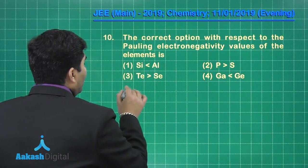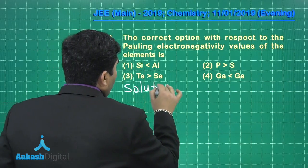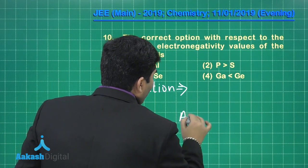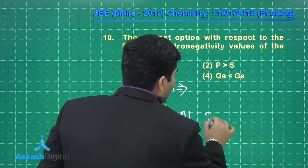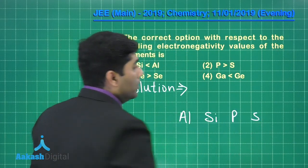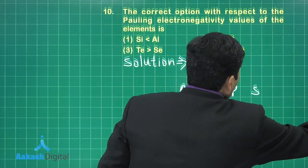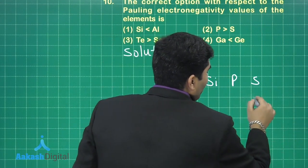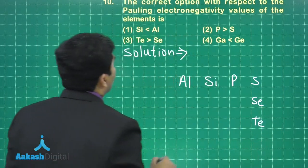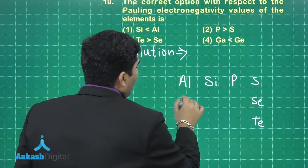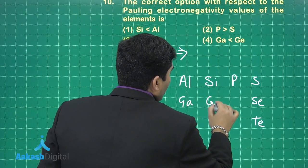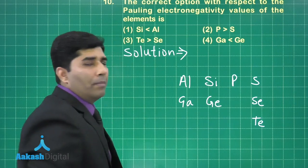What we can do in this question is - we know that aluminum, silicon, phosphorus and sulfur, they are in the same period and after sulfur it will be selenium, then tellurium, and below aluminum there is gallium and germanium here.